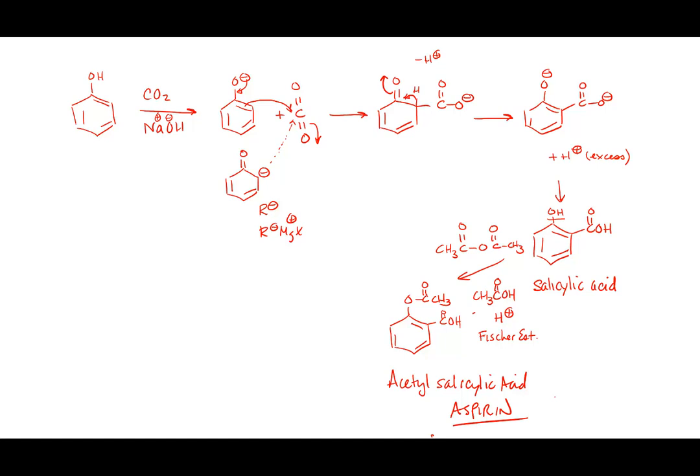The product is acetylsalicylic acid — aspirin. So the Kolbe-Schmitt reaction followed by acetylation gives aspirin industrially. It also reviews what happens when you react a Grignard-like species with CO2 — you get a carboxylate that you then protonate to form the carboxylic acid.